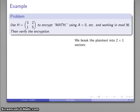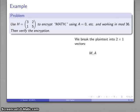Now, we'll next want to break the plaintext into 2 by 1 vectors. So that's going to be MA, which we'll encode using our A equals 0 code. That's going to become (12, 0). And then TH is going to become (19, 7).